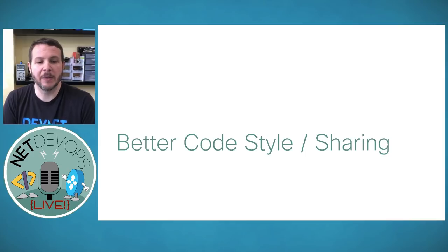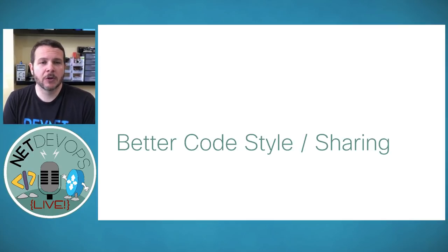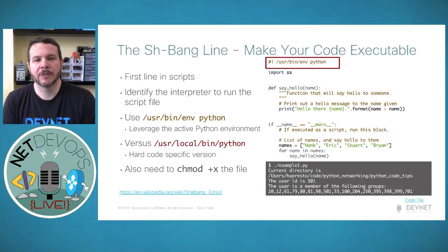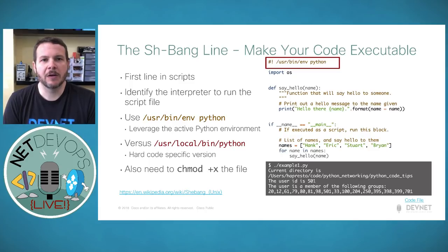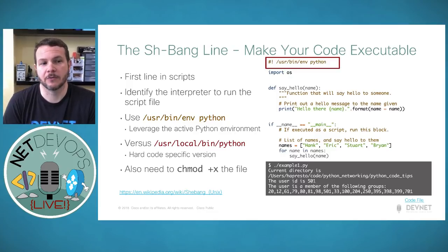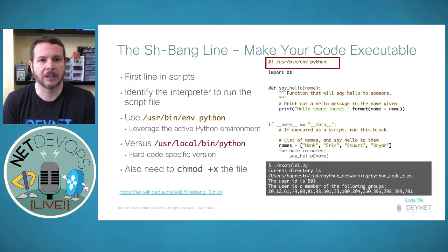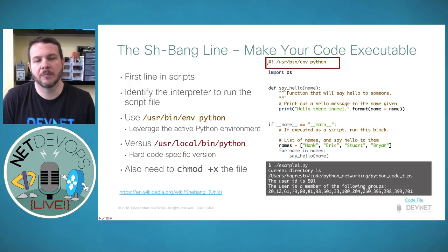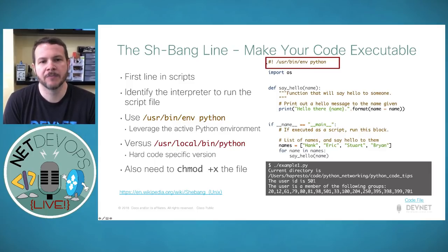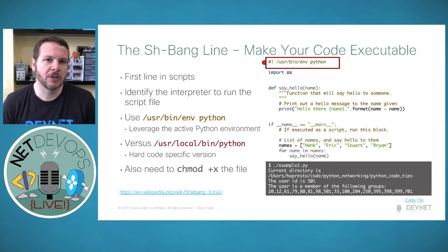Onto our first topic: better code style and sharing concepts. How can we make our code easier to share? We're going to start with making our code executable. The idea is we write a script and want people to just run it directly without having to type Python and then the script name. The first piece is using something in Unix called the shebang line, which is the first line in a script—not just for Python but for any Unix, Linux, or bash-type script.